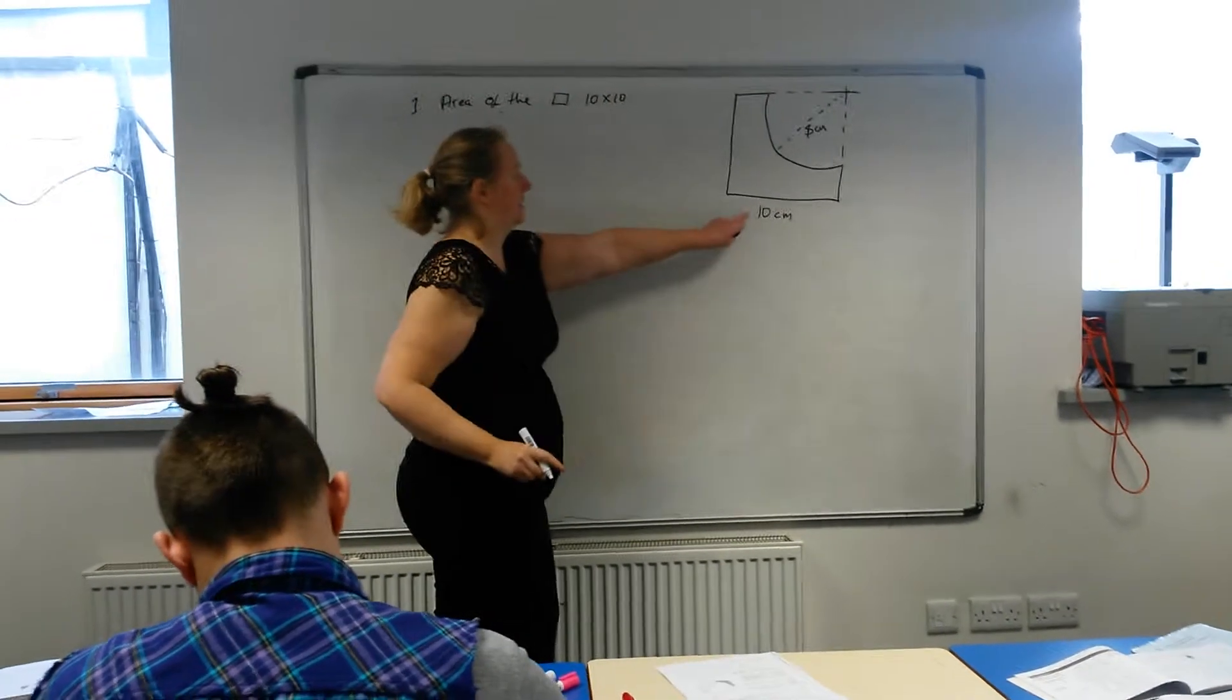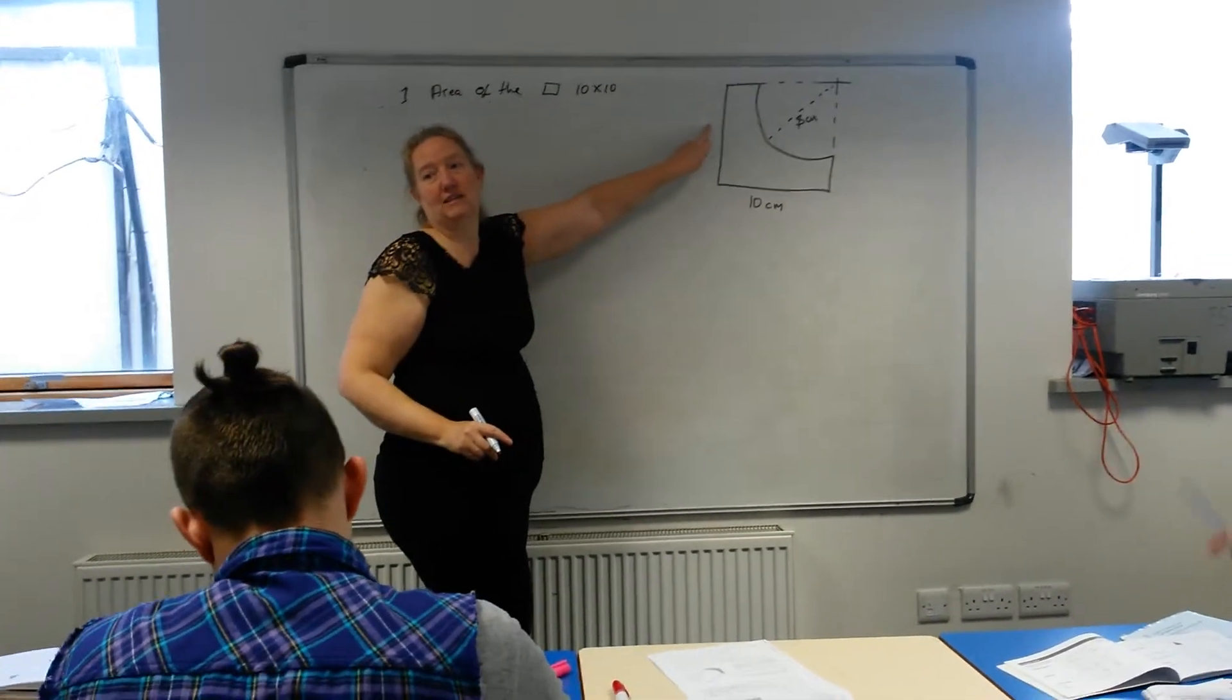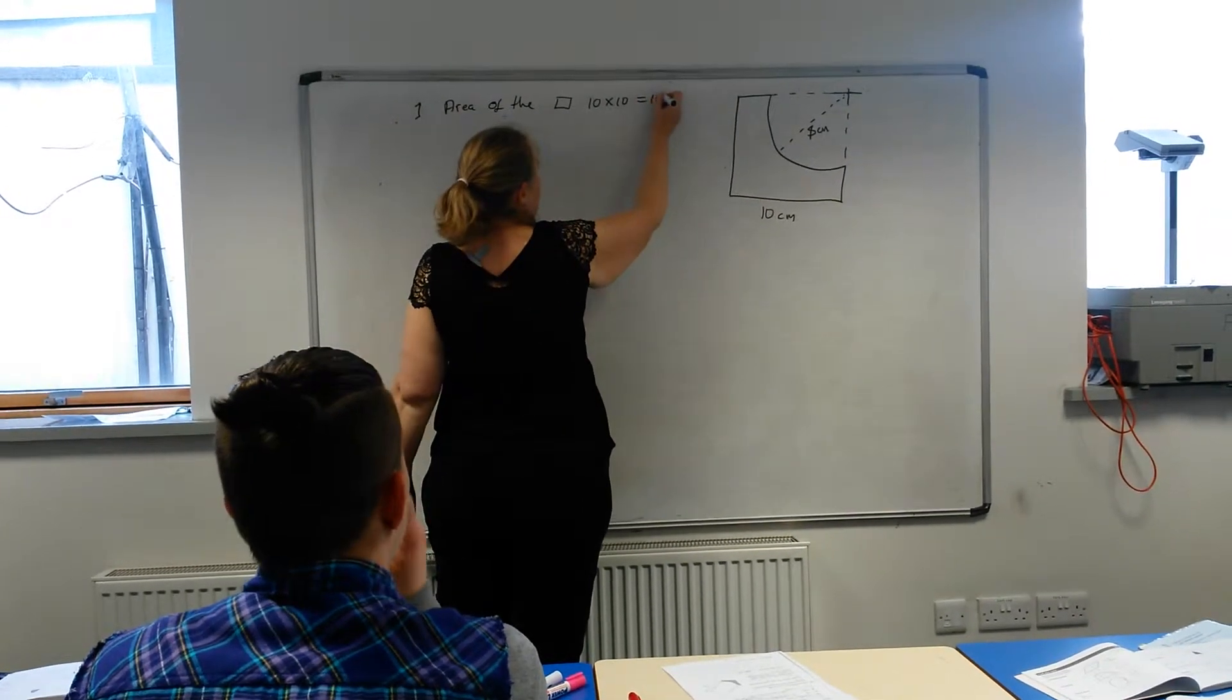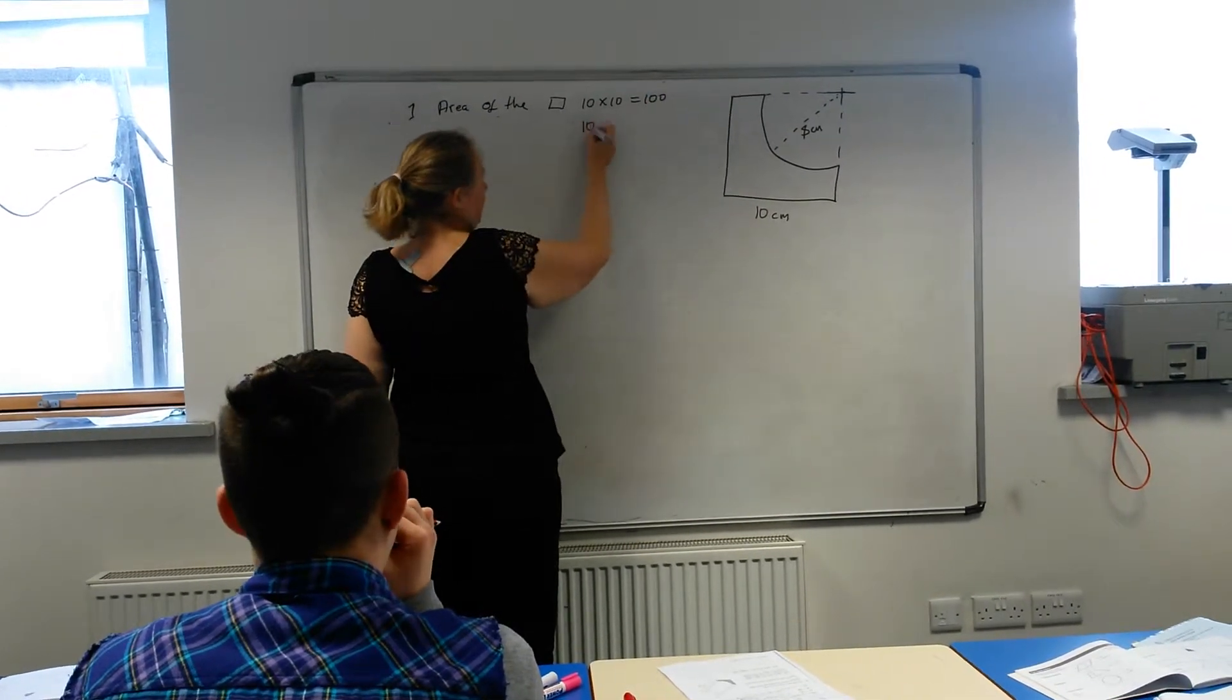Because the square, if that side is ten, that side is also ten, because all squares, the four sides are the same, which is a hundred, or ten squared.